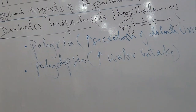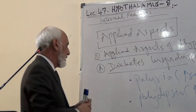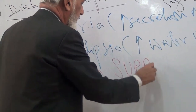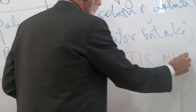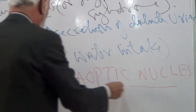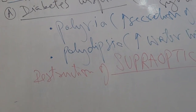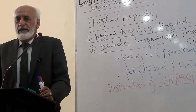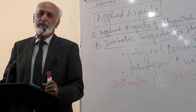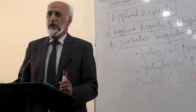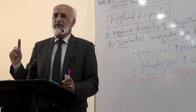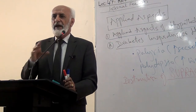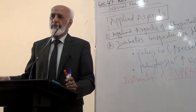This condition may result due to destruction of the supra-optic nucleus of the hypothalamus. The supra-optic nucleus is concerned with the maintenance of water balance. This nucleus produces ADH, also known as vasopressin or anti-diuretic hormone, which helps in water reabsorption from distal convoluted tubules and collecting tubules of the kidney nephrons. ADH is produced in the hypothalamus but stored and secreted by the posterior pituitary.